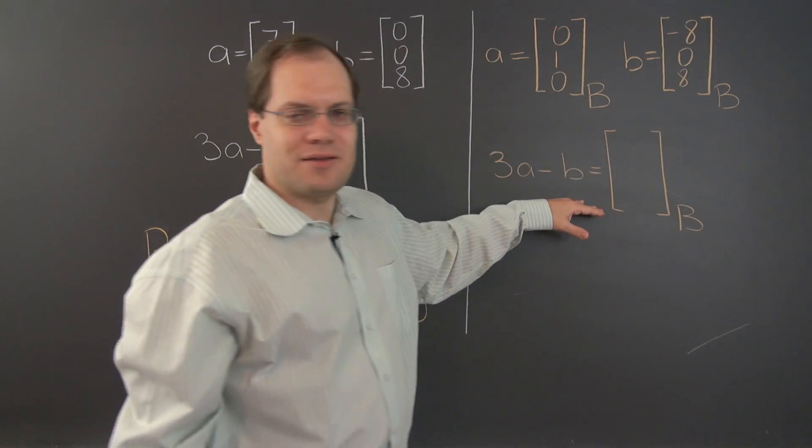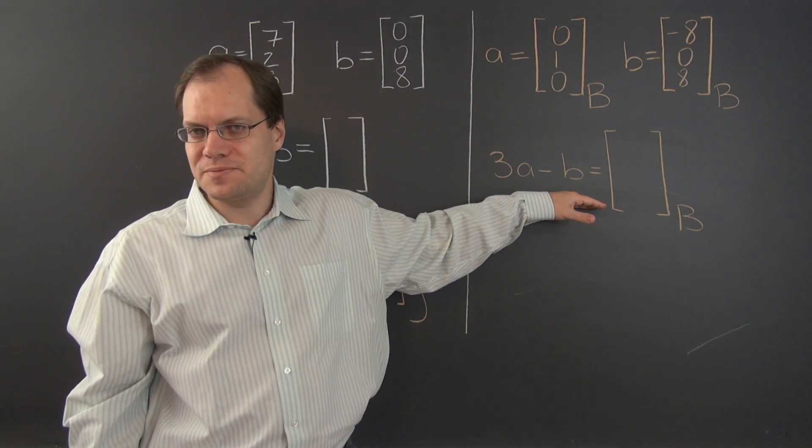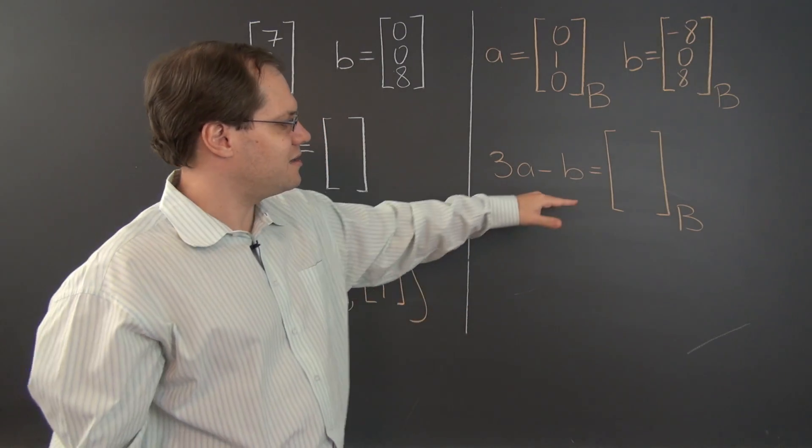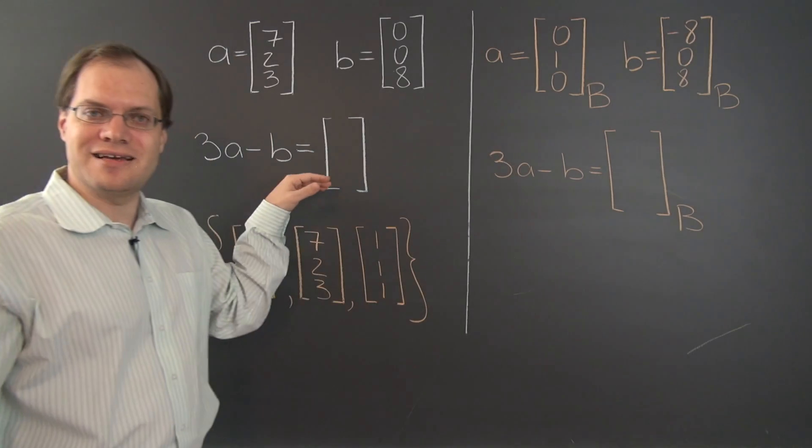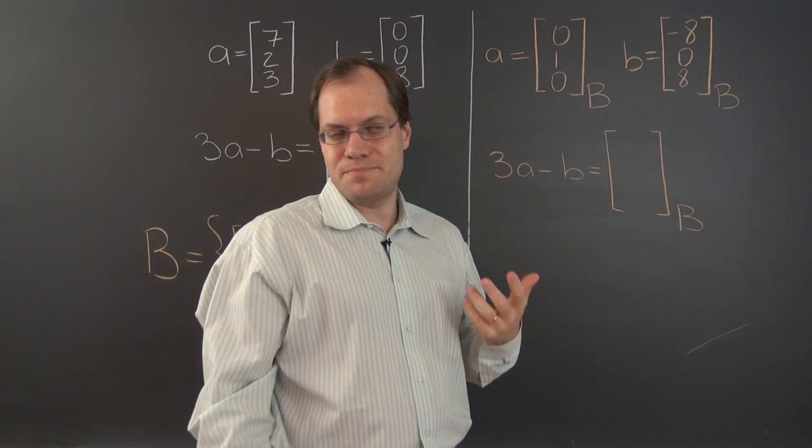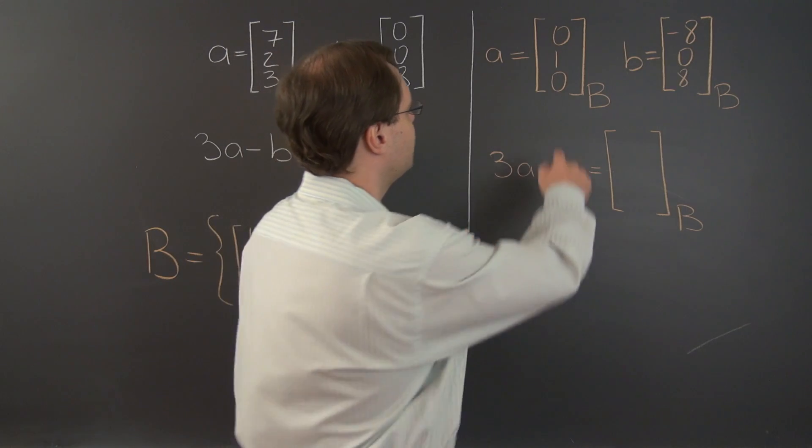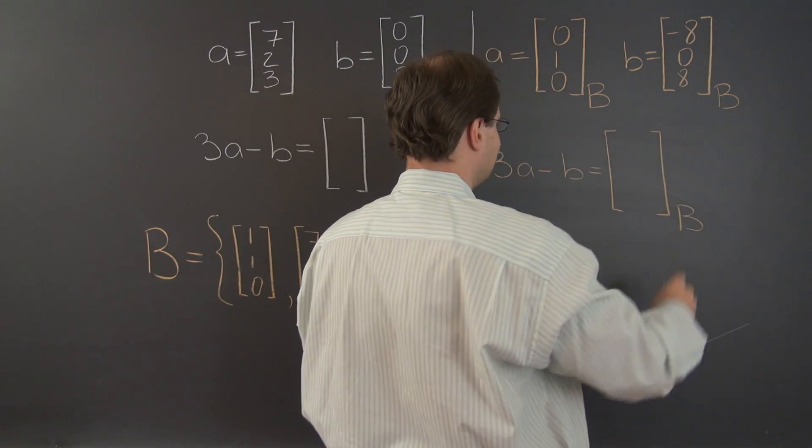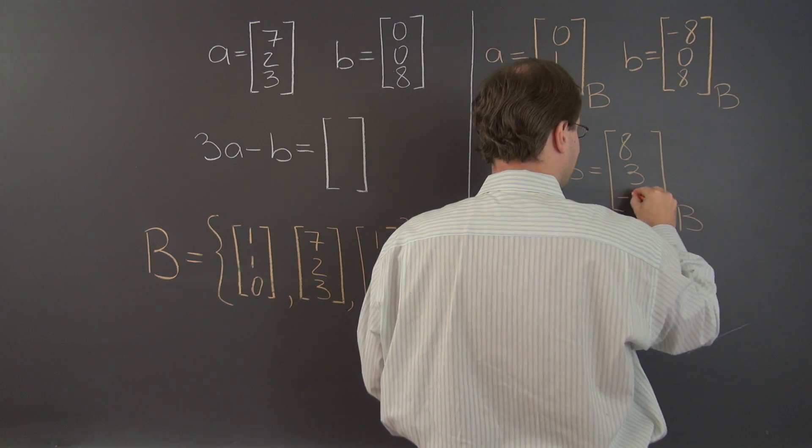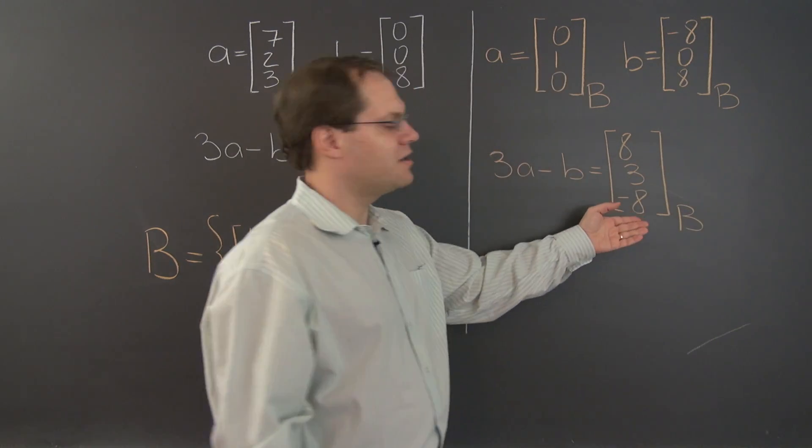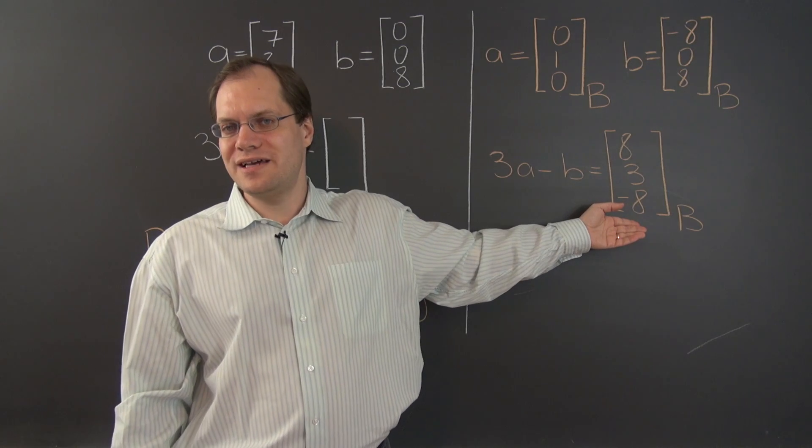And now let's calculate this linear combination in component space. Of course I'm not saying at all that it's easier in this case to do in the component space than in the actual space, but we're just illustrating a point. So three of this minus this is 8, 3, negative 8. And here we have the components of the answer.